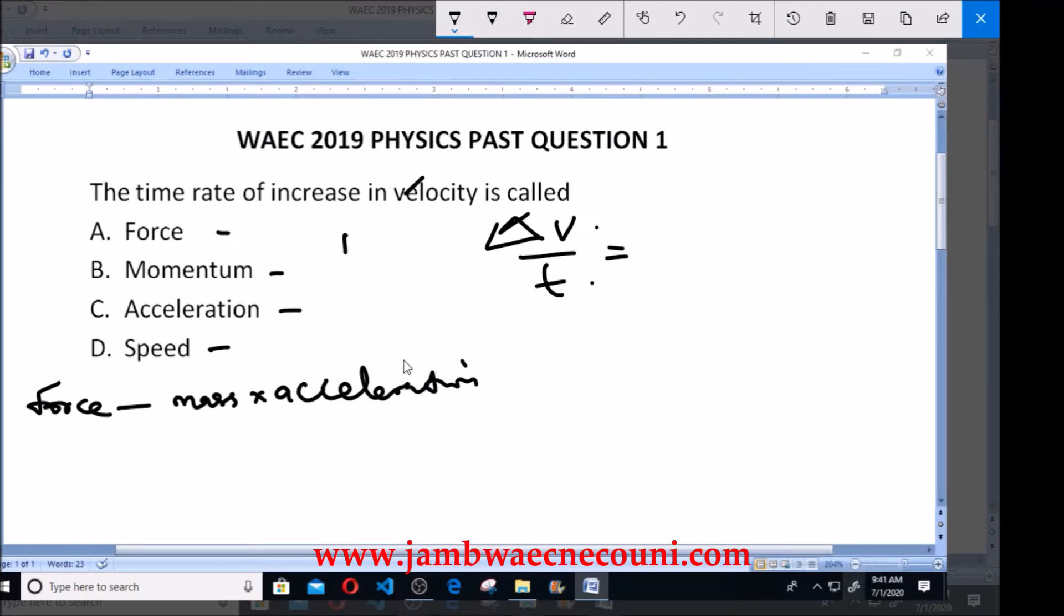Let's look at the second one which is momentum. What is momentum? Momentum is simply defined as the product of mass and velocity.